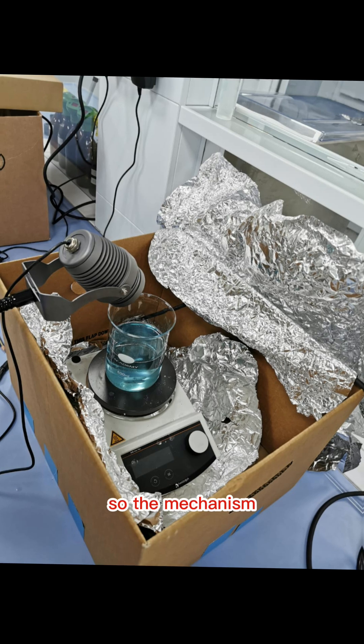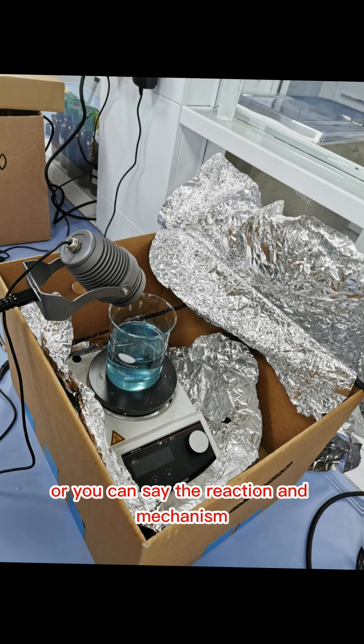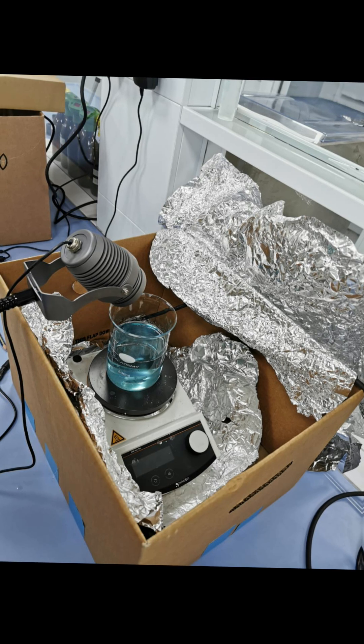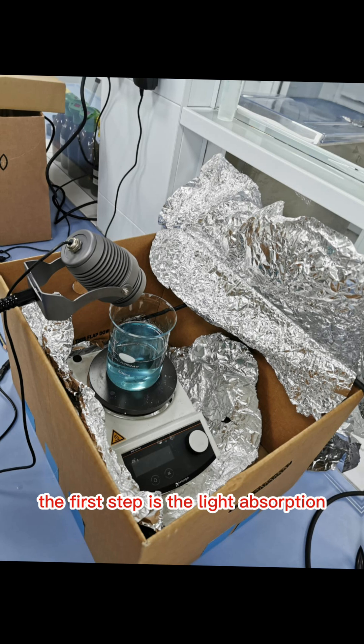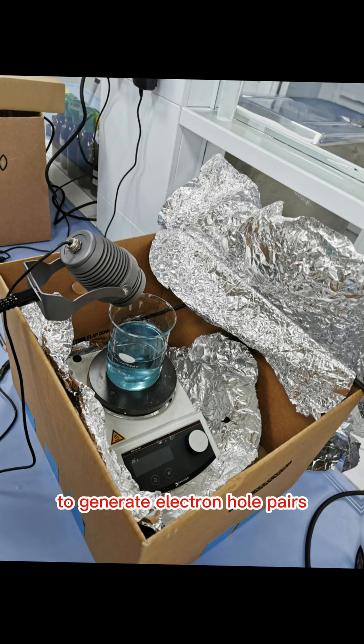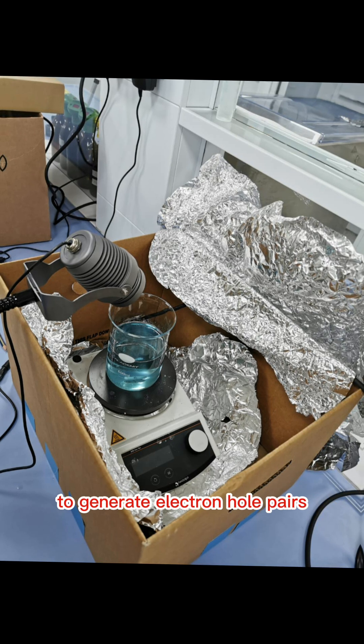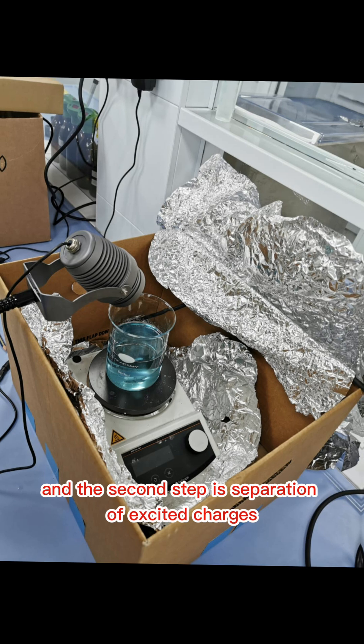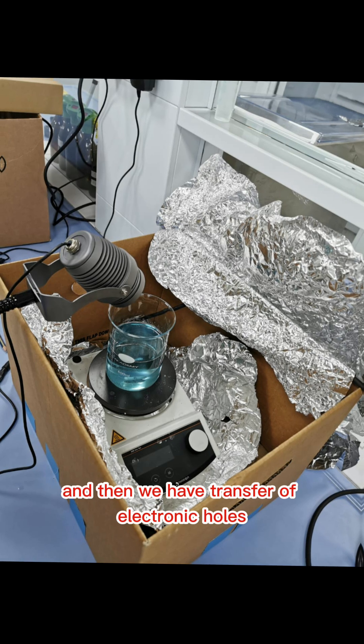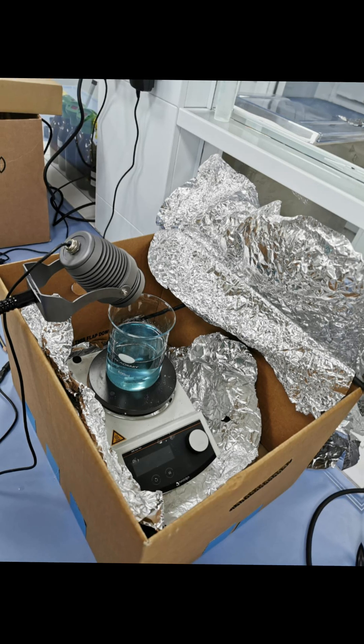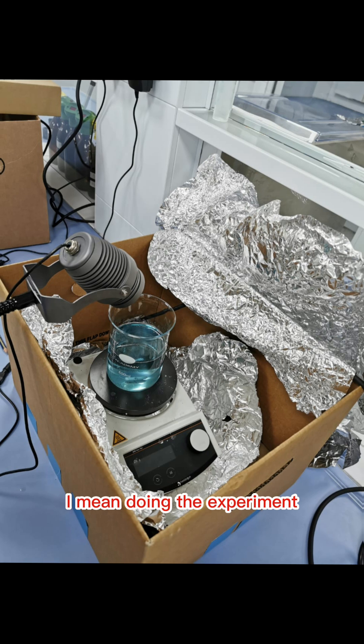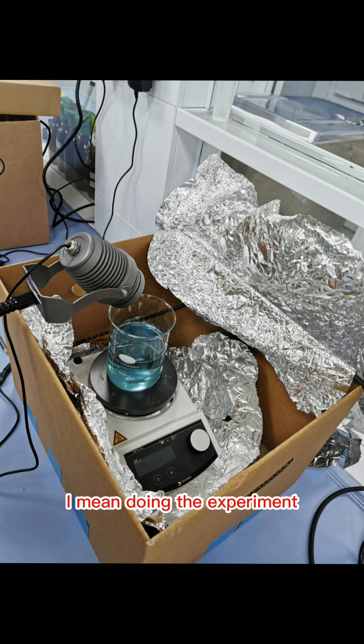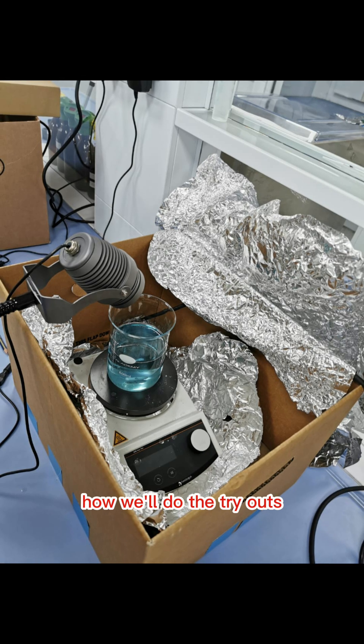The reaction mechanism can be described by four important steps in the case of photodegradation. The first step is light absorption to generate electron-hole pairs. The second step is separation of excited charges, then transfer of electron holes to the surface of the photocatalyst. Shortly we will be seeing how we will do the experiment and tryouts.